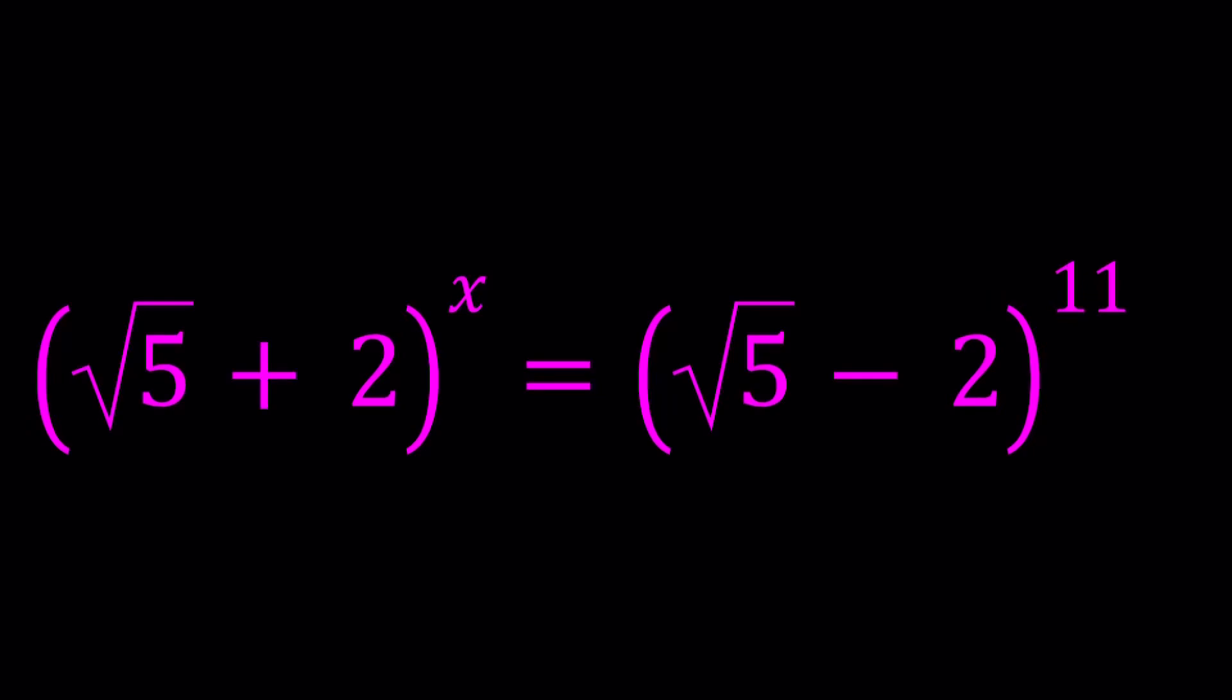Hello everyone, in this video we're going to be solving an exponential equation with radicals. How radical it can get, right? So we have square root of 5 plus 2 to the power x equals square root of 5 minus 2 to the power 11. We're going to be solving for x values and I'll be presenting two methods.